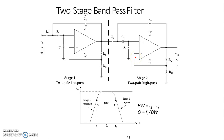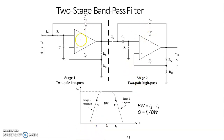Keep in mind: to construct a wide bandpass filter, the corner frequency of the low pass filter, f2, must be higher than the corner frequency of the high pass filter, f1. Reverse cascading is also possible — you can give the input to the high pass filter and take the output from the low pass filter.